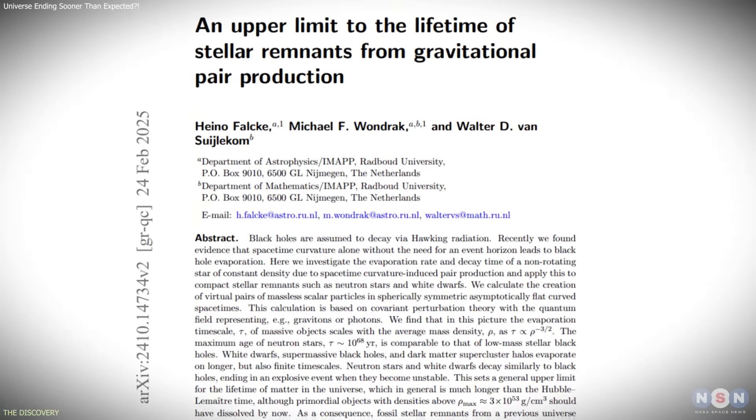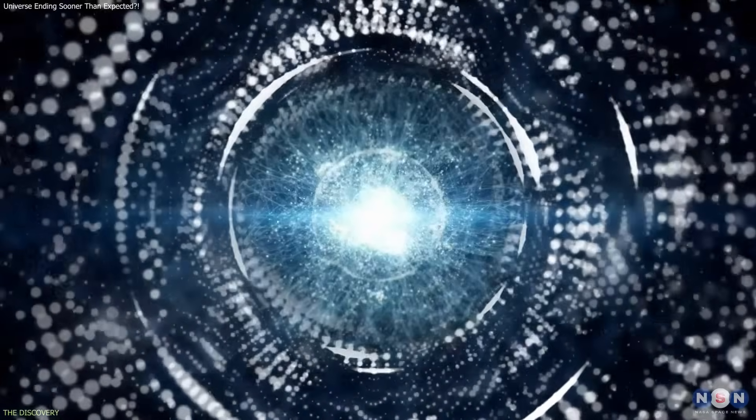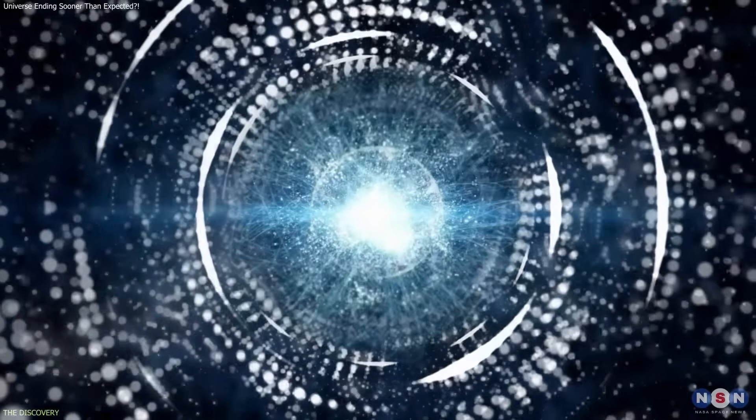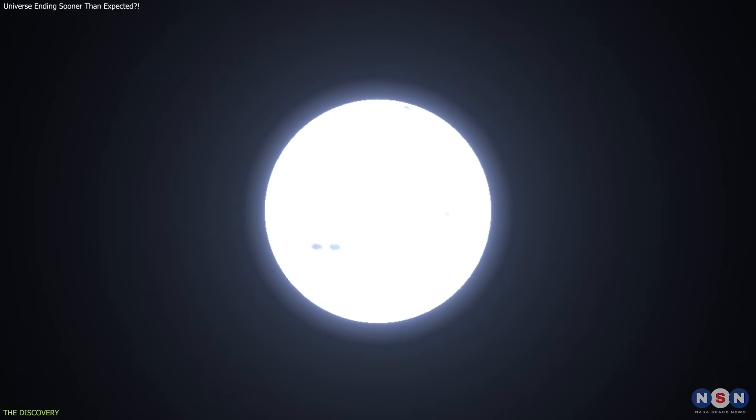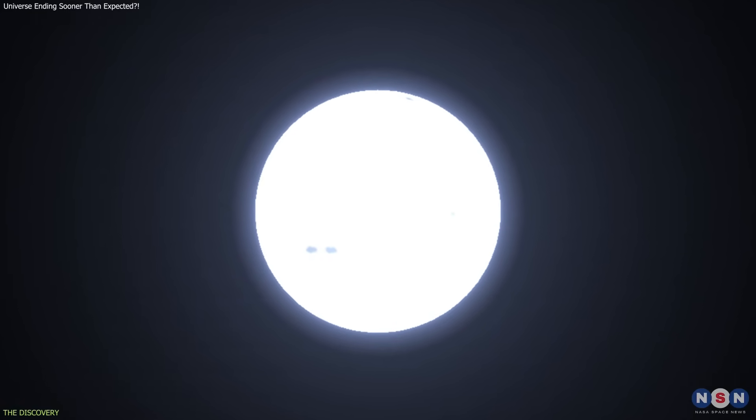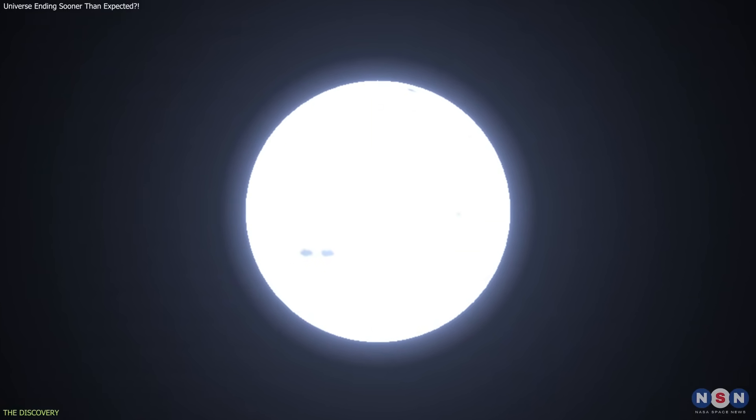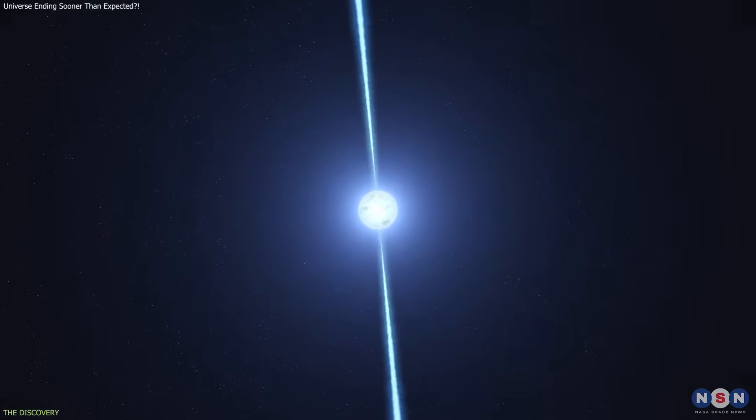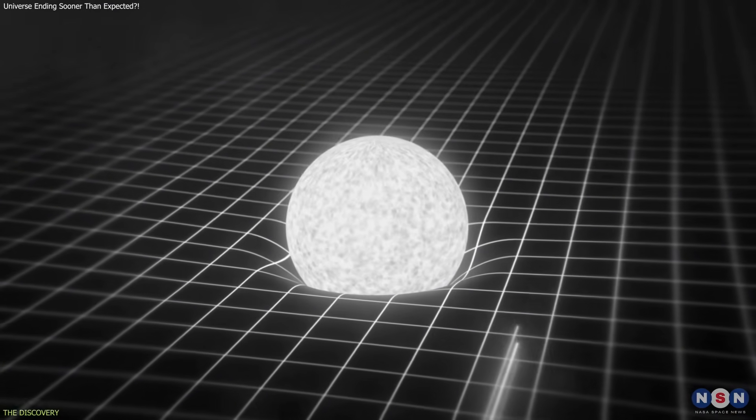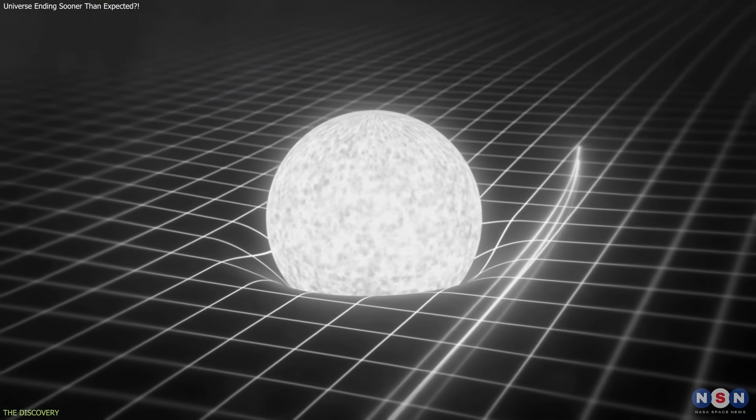The researchers challenged this assumption by examining how quantum fields behave around a compact object solely due to spacetime curvature. To isolate this effect, they built a model consisting of a spherical, constant-density star surrounded by vacuum. This simplification removes complications like rotation or magnetic fields, and focuses entirely on how strong curvature influences the quantum vacuum.